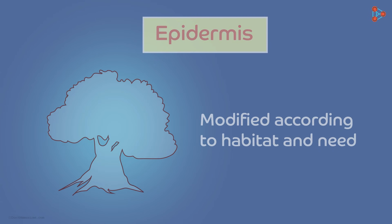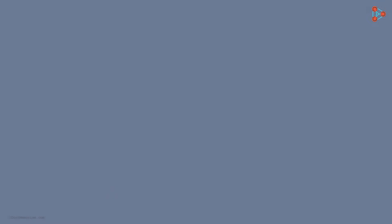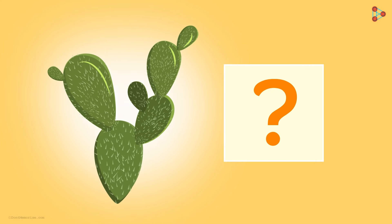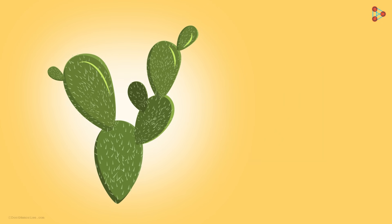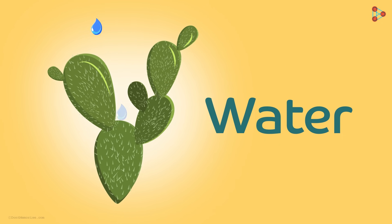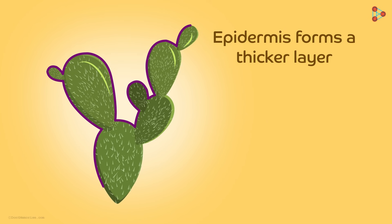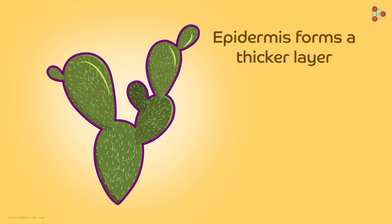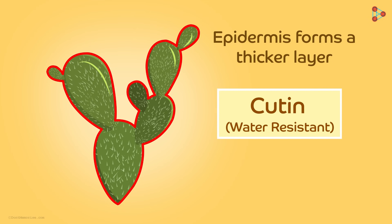What would plants growing in a dry habitat need the most? Yes, water! In case of such plants, the epidermis forms a thicker layer in order to prevent excessive water loss. In fact, plants growing in desert have a thick, waxy chemical called cutin in their epidermal cells, which prevents water loss to the maximum extent.